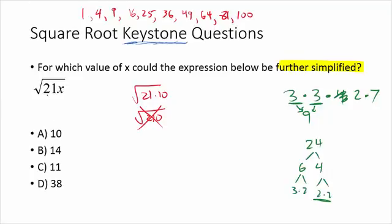Let's apply this to our example. The prime factorization of 21 is seven times three — that's as far as it splits. Now if I can find a matching factor in one of the answer choices, that's the correct answer because it will have a perfect square hidden in it. Starting with 10: that's two times five — no matching two or five, so move on. Fourteen is seven times two — and we have a matching seven!